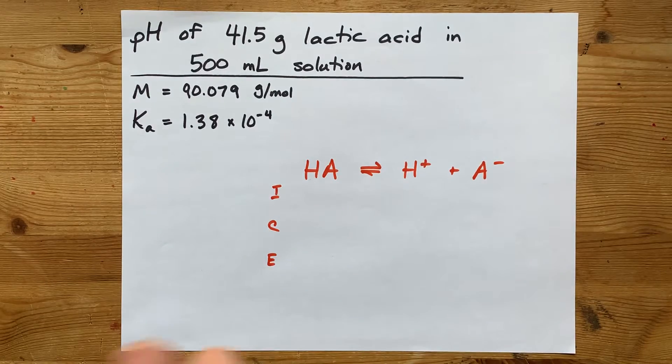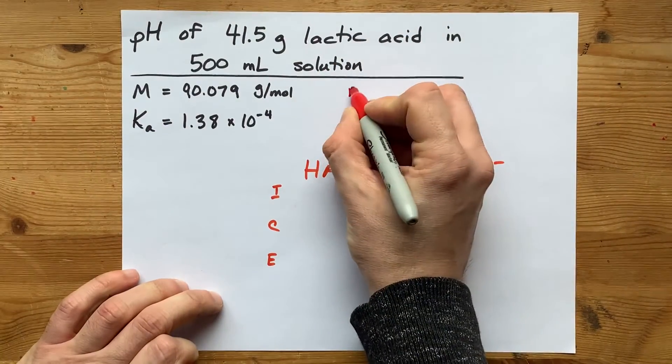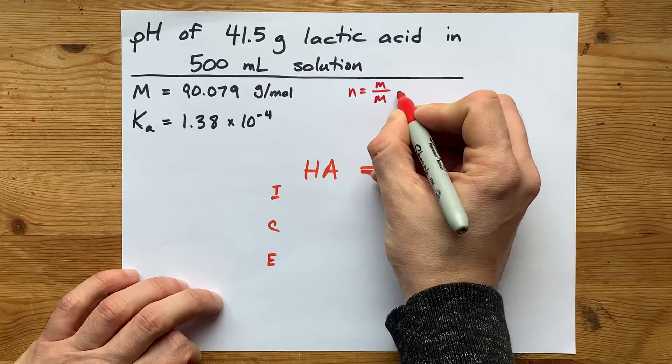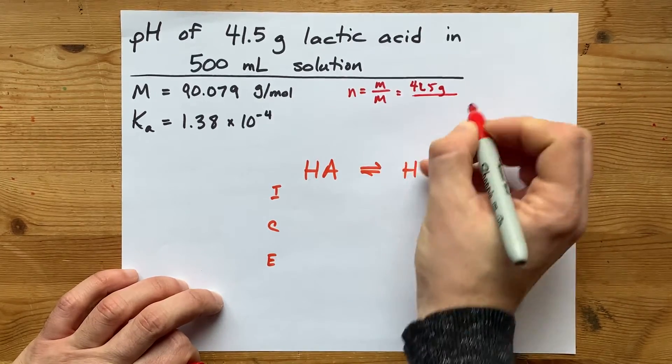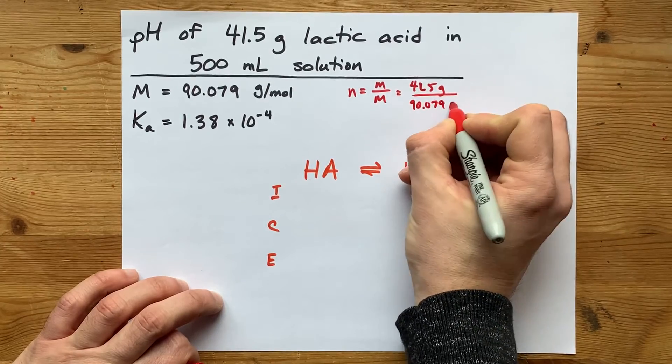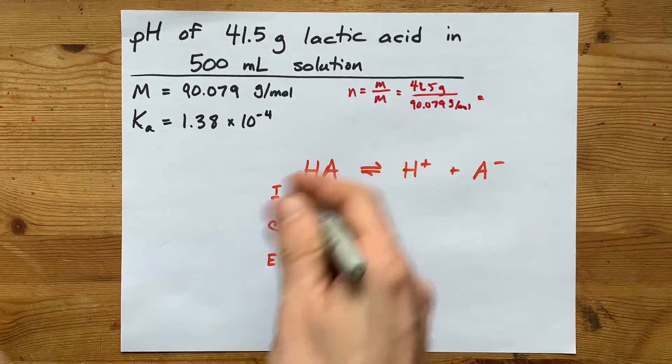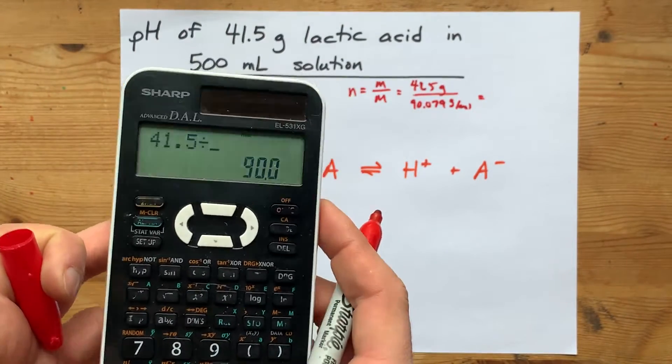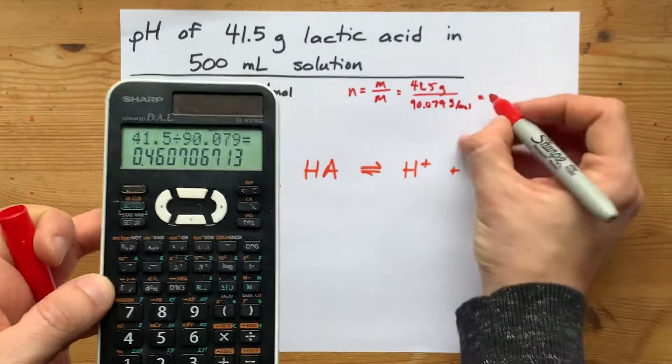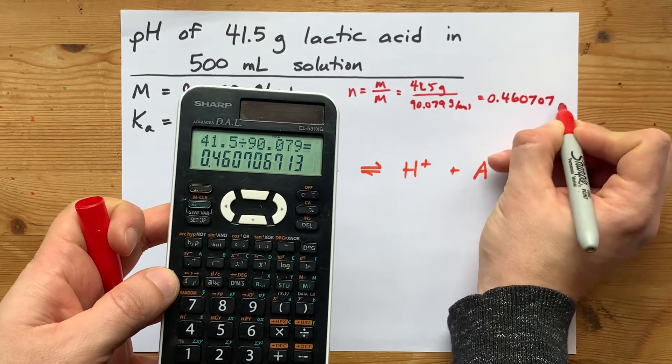Unfortunately, we don't have that here, but we can calculate it. I need the number of moles of lactic acid. That's going to be mass divided by molar mass. 41.5 grams divided by the molar mass, which again, I was given in this question. If you weren't, you could calculate it on your own. 41.5 grams divided by 90.079 is 0.460707 moles.